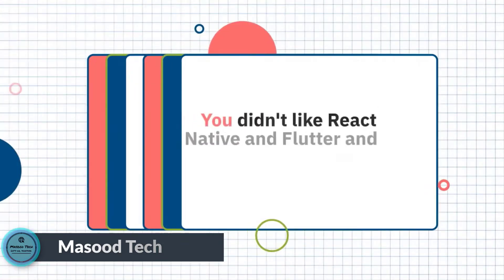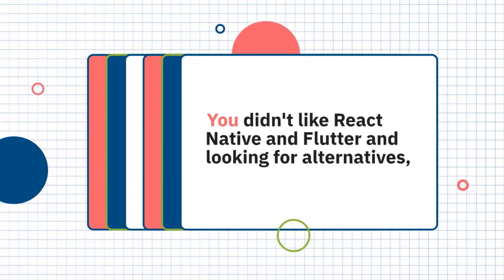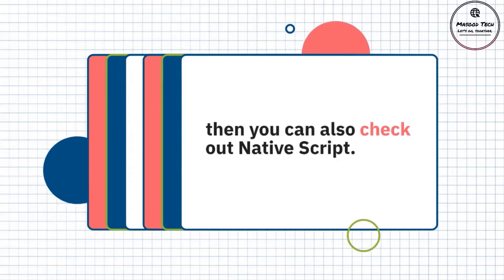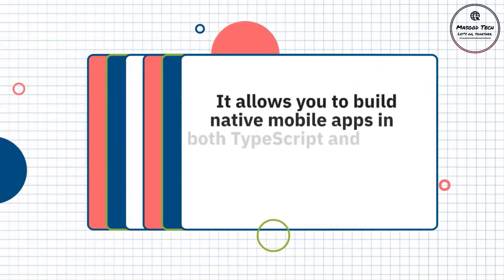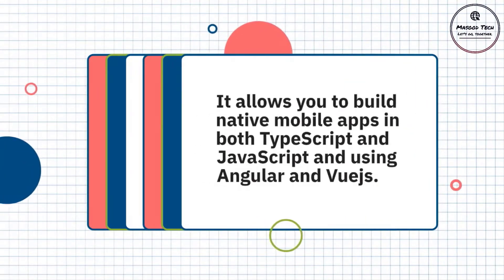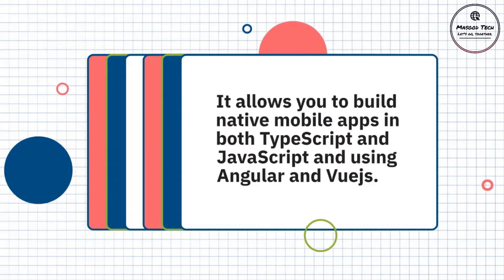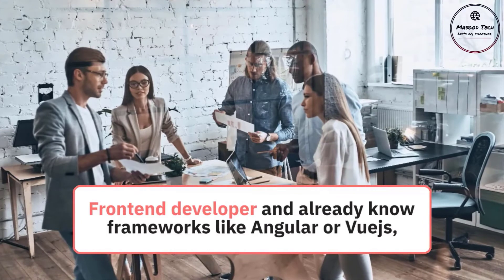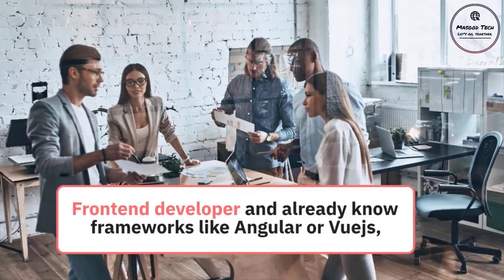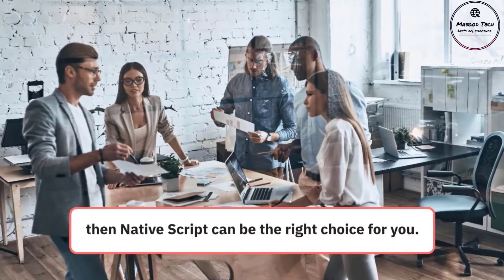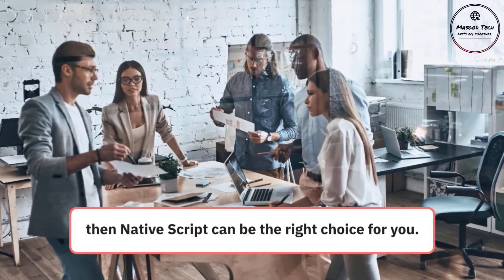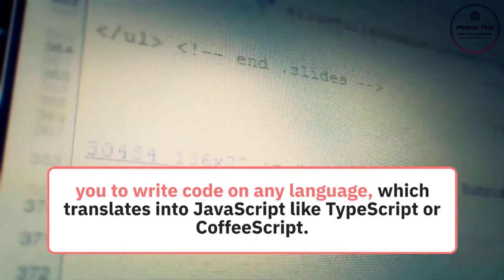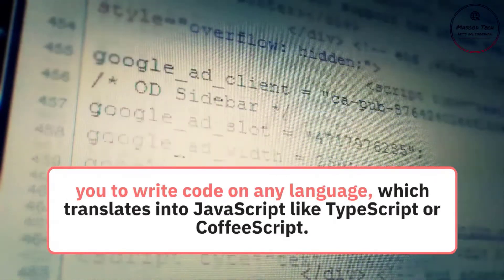Number five: NativeScript. If you didn't like React Native and Flutter and are looking for alternatives, you can check out NativeScript. NativeScript is a free and open source framework to develop mobile applications for both Apple iOS and Google's Android platform. It allows you to build native mobile apps in TypeScript and JavaScript, and using Angular and Vue.js. If you are a front-end developer already familiar with Angular or Vue.js, NativeScript can be the right choice for you. It features deep integration with both Angular and Vue.js, and allows you to write code in any language that compiles to JavaScript, like TypeScript or CoffeeScript.